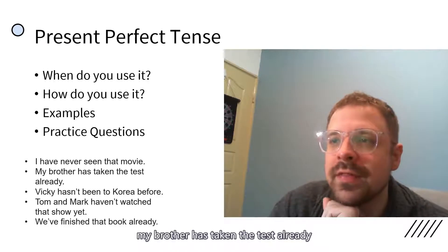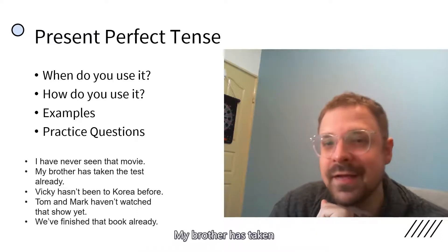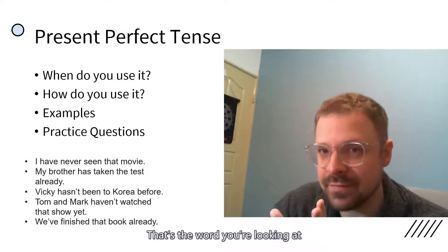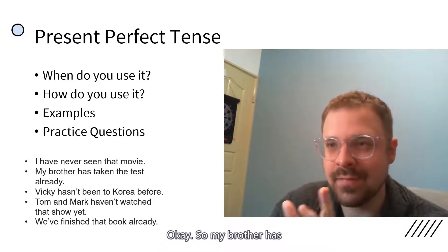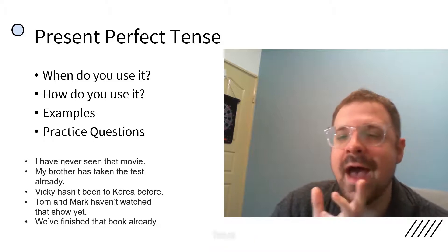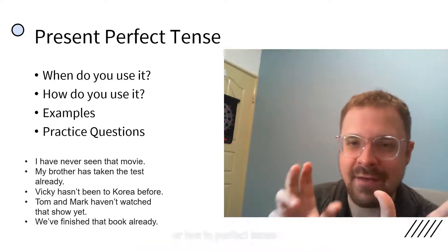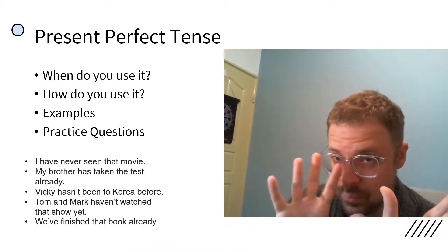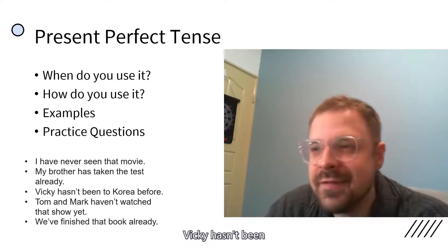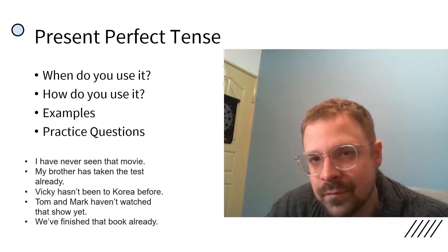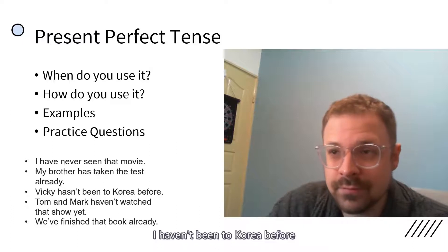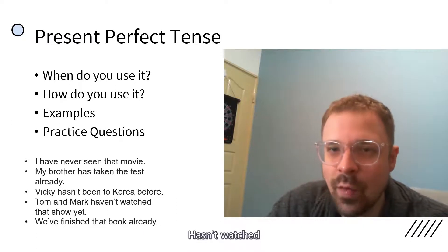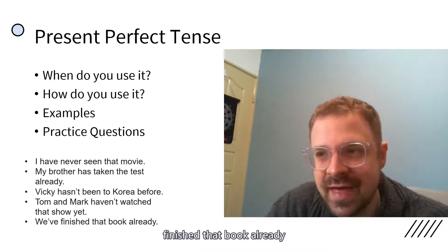Next one. My brother has taken the test already. Straightforward. Brother is he. So he has. That's the verb you're looking at for deciding is it has or have. So my brother has, my brothers have. Keep in mind, the noun will impact have or has in perfect tense. So my brother has taken the test already. My friends, more than one, have taken the test already. Vicky hasn't been to Korea before. I haven't been to Korea before. Tom and Mark haven't watched that show yet. She hasn't watched that show yet. We've finished that book already.